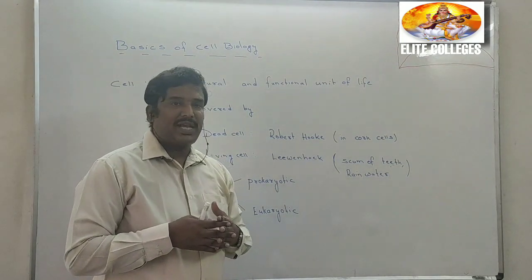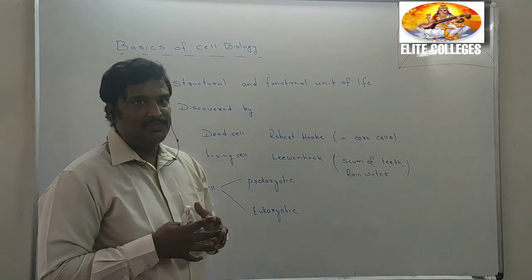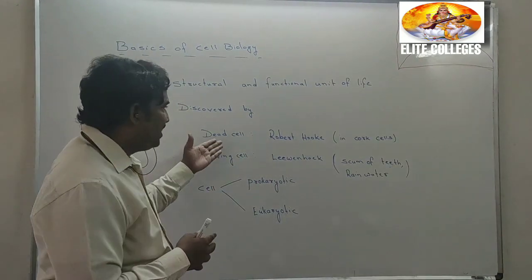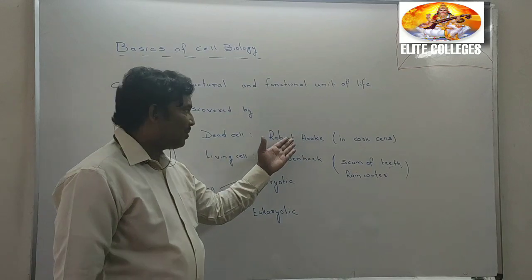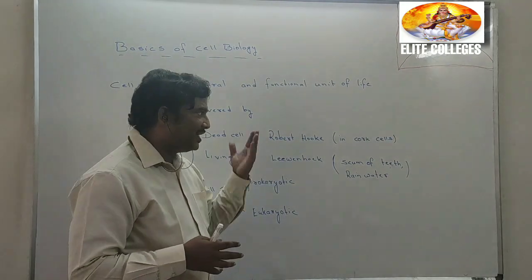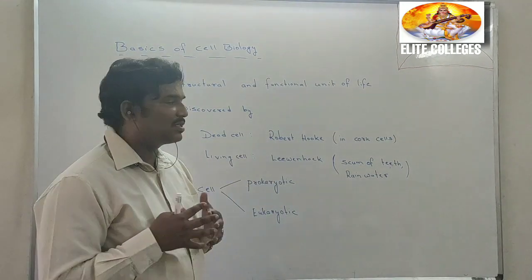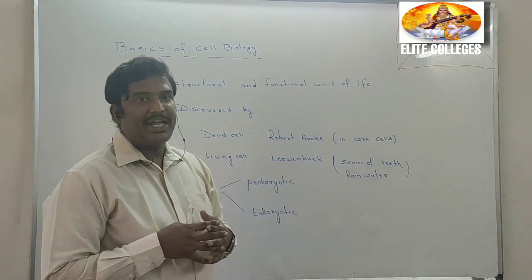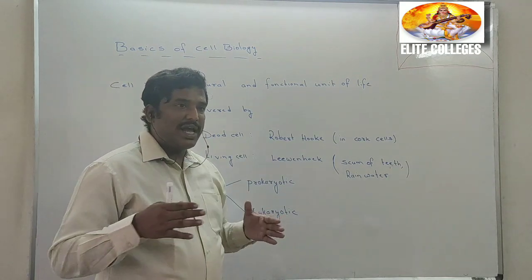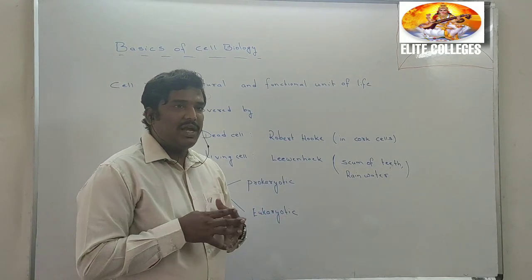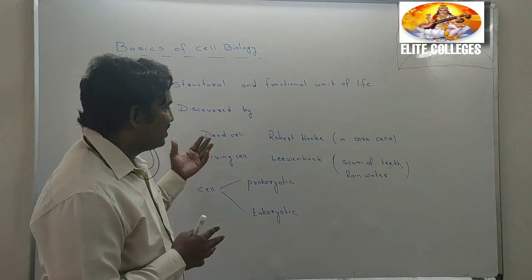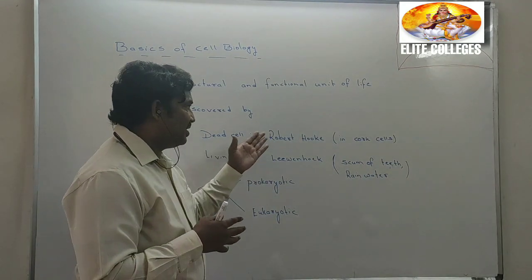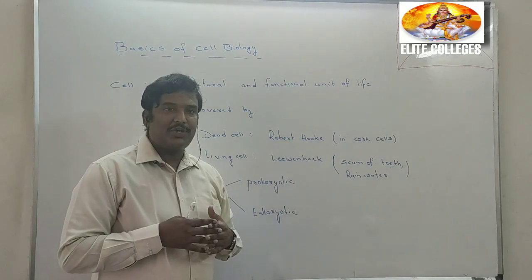Before going into detail about the cell, who has discovered it? There are two discoveries generally given initially. In the dead cell, the cell was first discovered by Robert Hooke. He took the cork cell and examined it under the compound microscope. He found that some cells are present, and those are the dead cells. The first discovery of the cell was credited to Robert Hooke.